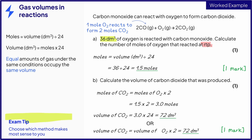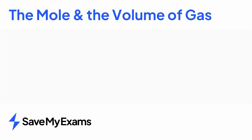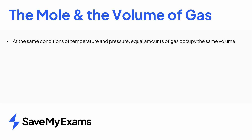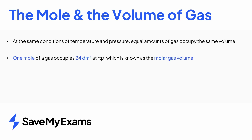Either method of calculating the answer is valid, and you should use whichever method makes the most sense to you. In summary, at the same conditions of temperature and pressure, equal amounts of gas will occupy the same volume. At room temperature and pressure, one mole of gas occupies 24 decimetres cubed, or 24,000 centimetres cubed. This is known as the molar gas volume. We can calculate the amount of gas at RTP using the following equations.